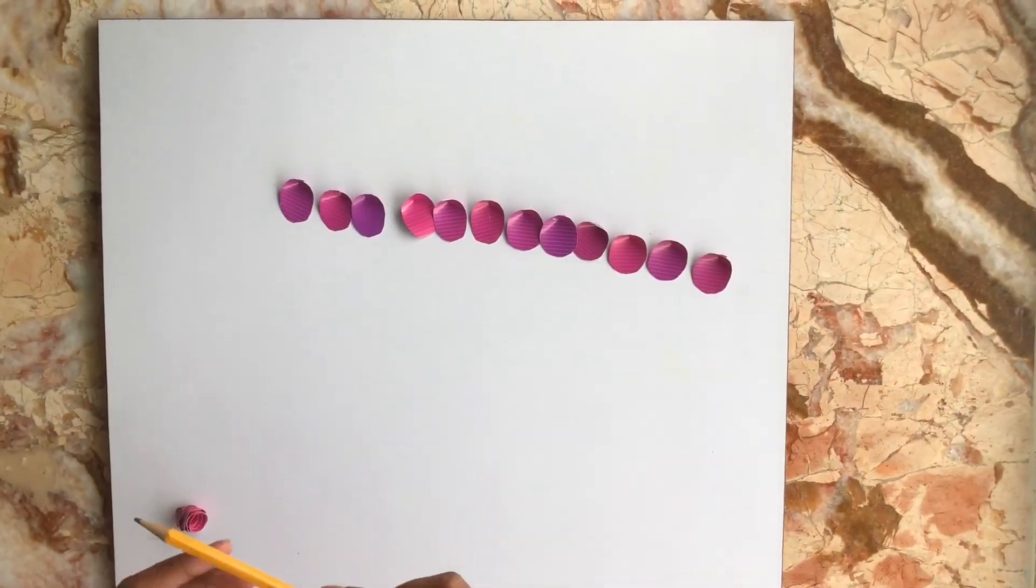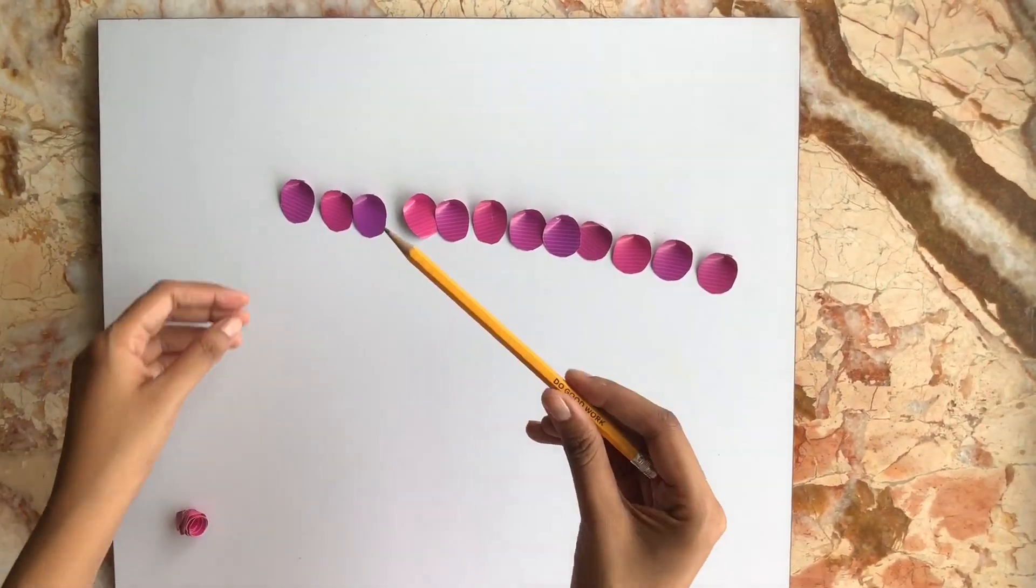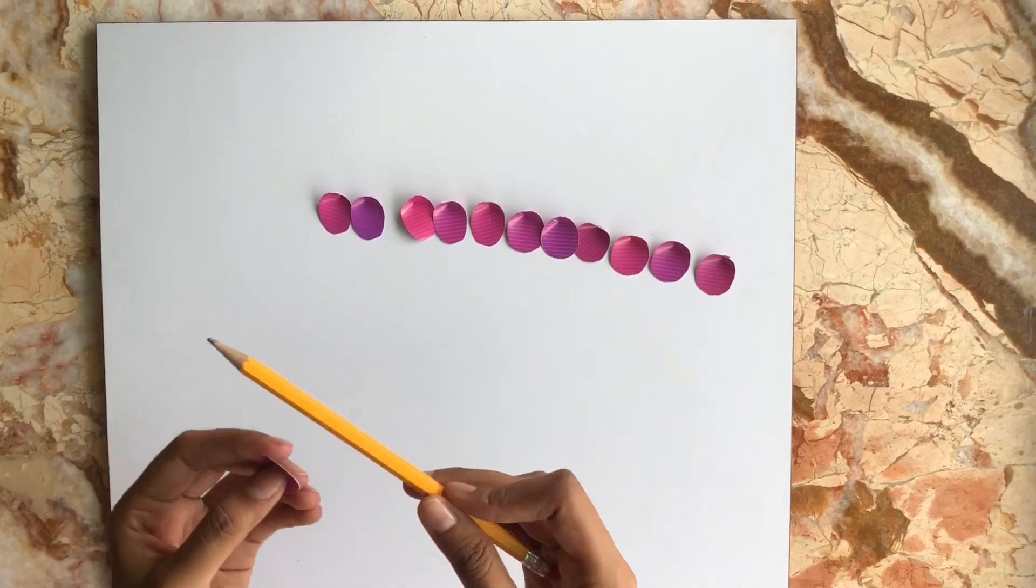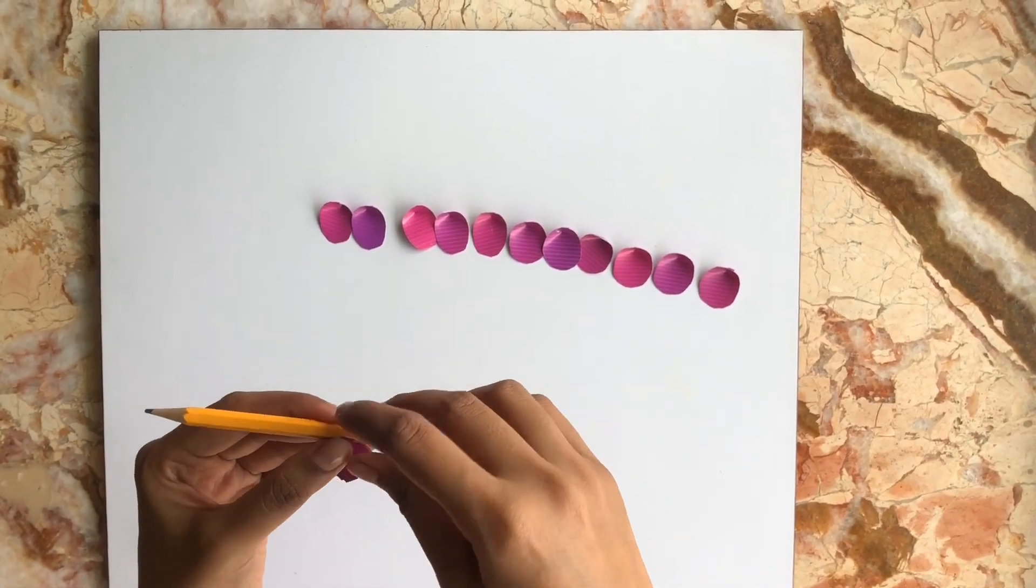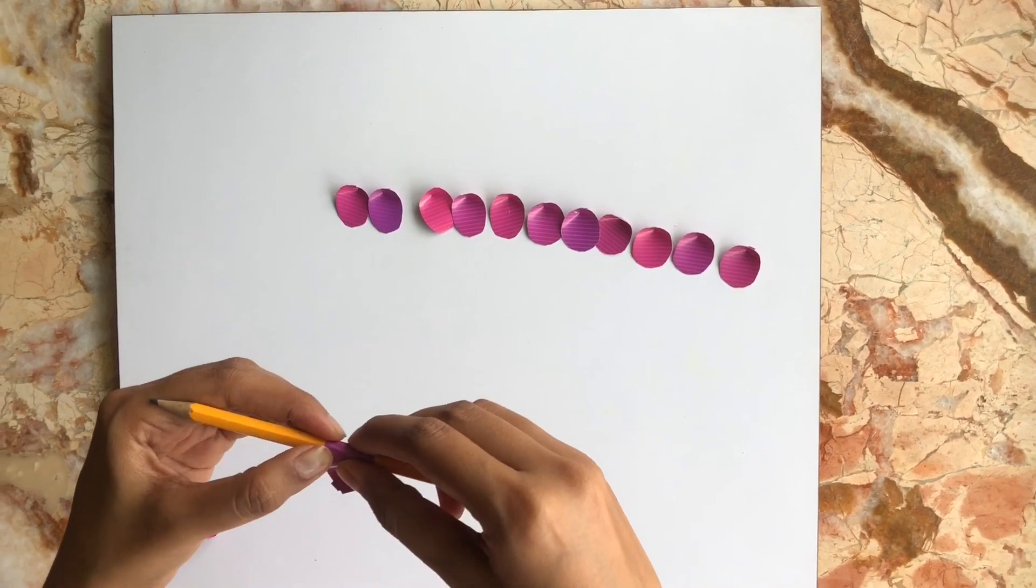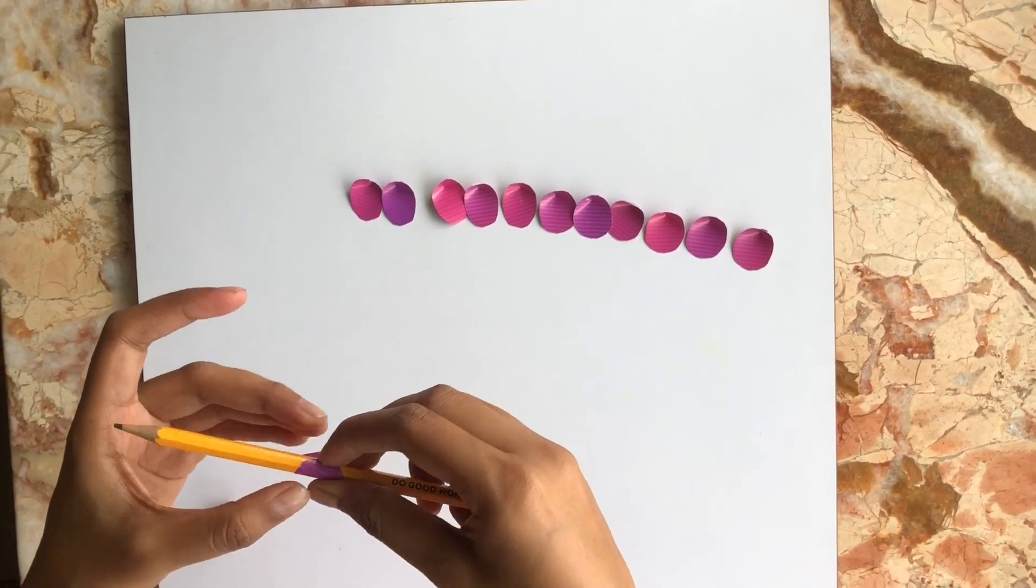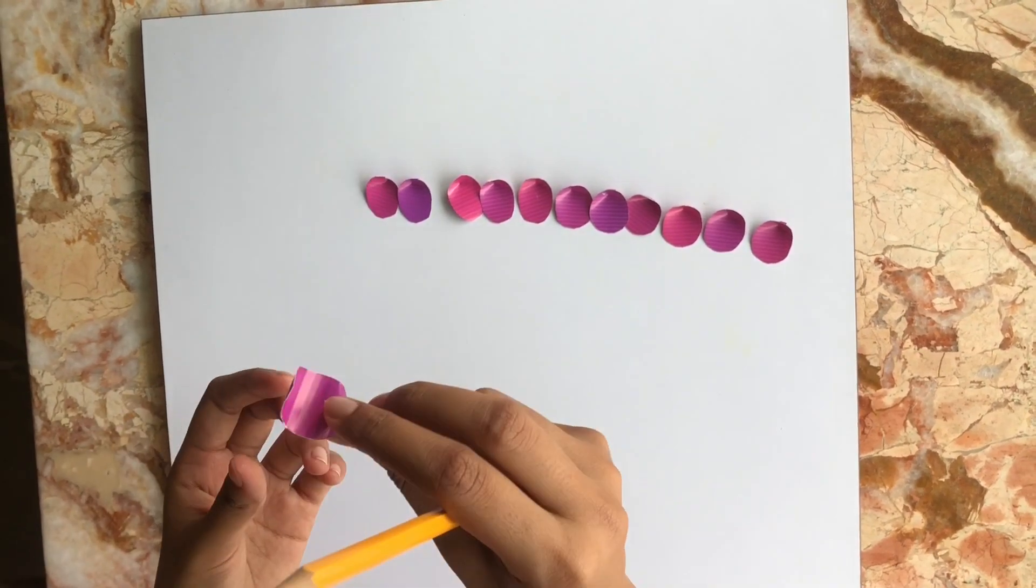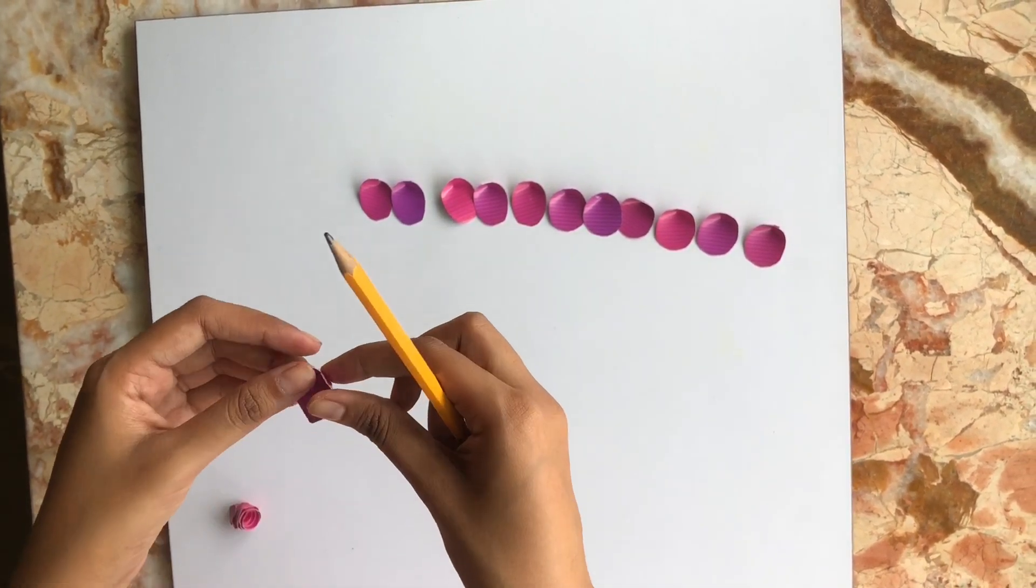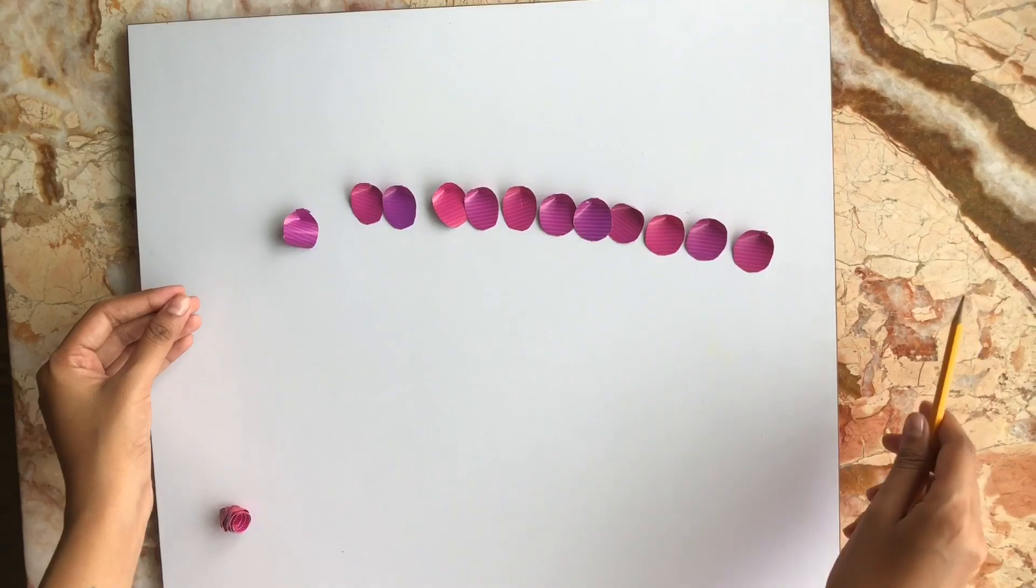To add more character to the petals, use your pencil. Take a petal, place the pencil at the back of the petal, and roll slightly. This is what it should look like once done. We do the same for all petals.